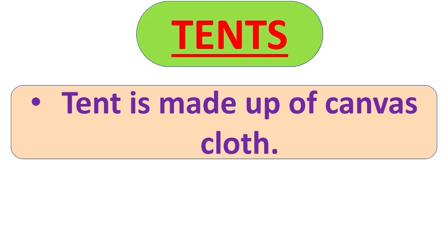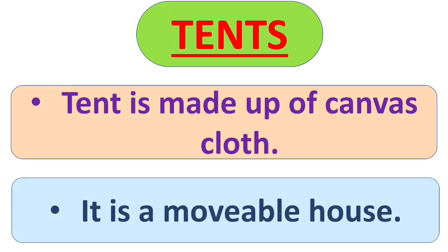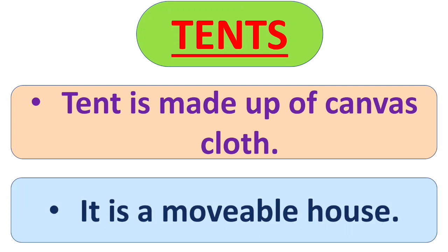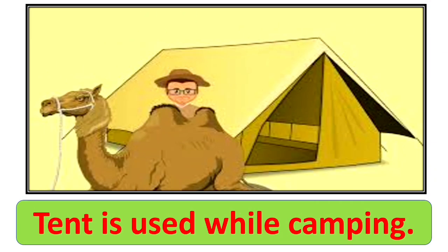The next example of Kaccha house is tents. Tent is made up of canvas cloth. It is a movable house. Tent is used while camping. Tents are used by soldiers, and we also use tents when we go for a picnic for a few days.